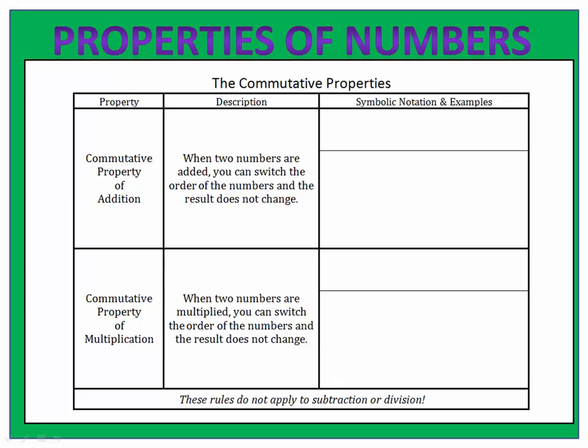Here's what they say. Suppose you're going to add two numbers, three and five. You can add three and five, or you could do five plus three. Either way, you'll get the same answer. When you're adding two numbers, the order doesn't really matter. In symbolic notation, we would say a plus b equals b plus a.